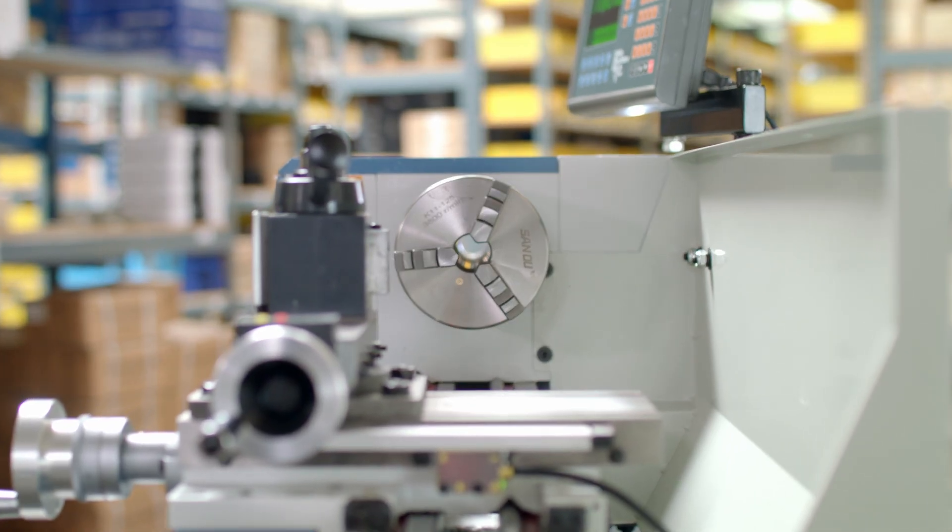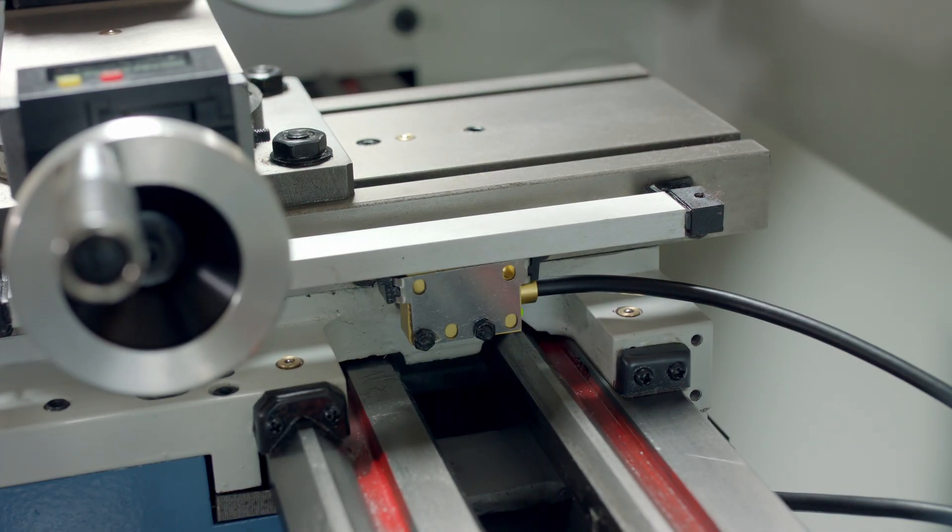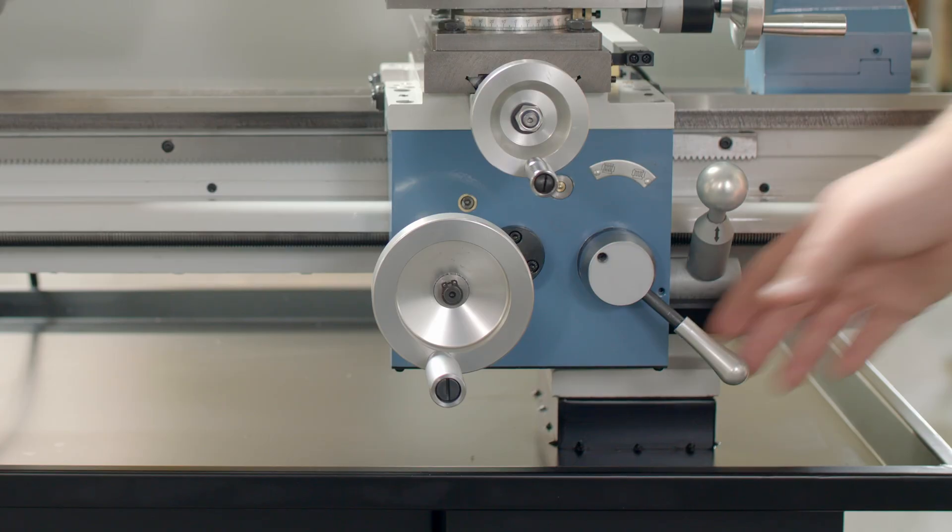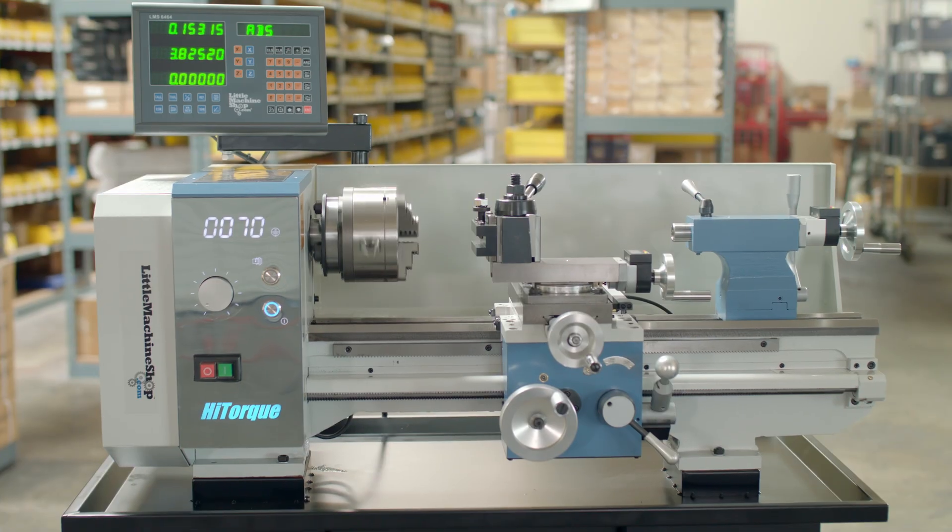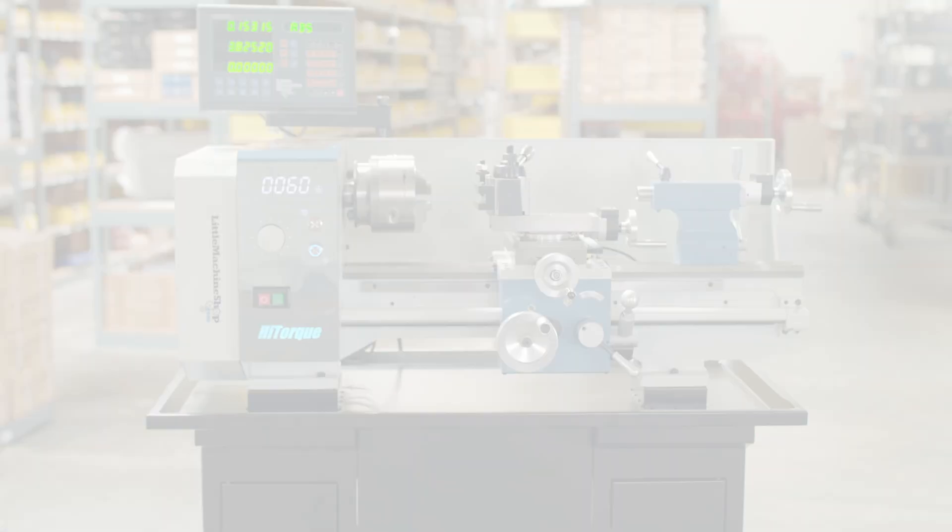This bench lathe provides a larger spindle bore, more swing over bed, a comprehensive LED display, improved mechanics, and numerous other upgrades compared to previous models. You can find the High Torque 7650 bench lathe on littlemachineshop.com.